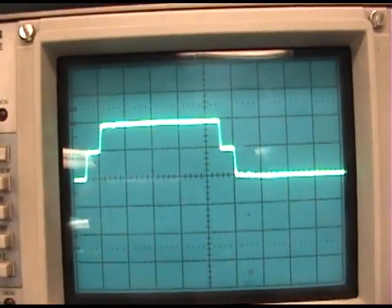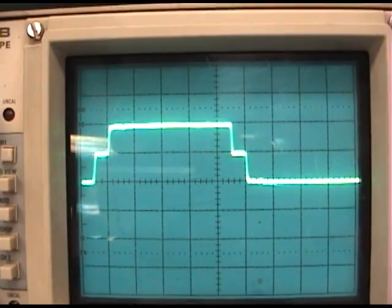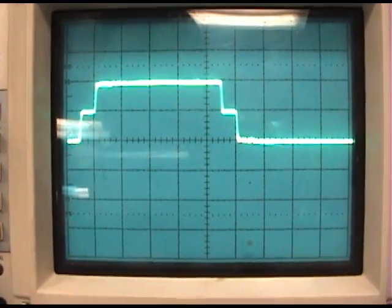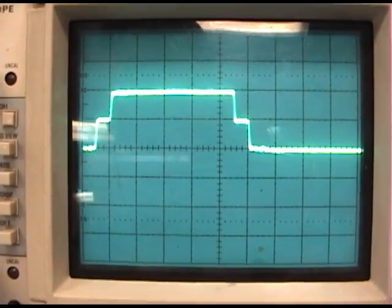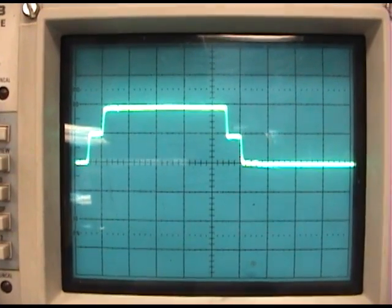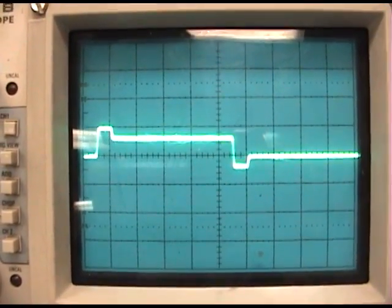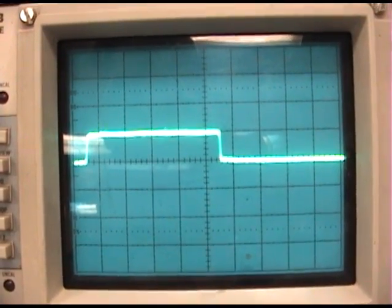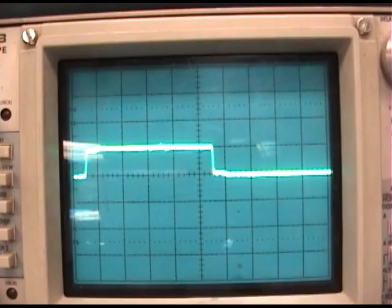So, as I adjust this pulse to, or as I adjust the potentiometer to closer to 50 ohms, we're going to see the reflection start to disappear. Because more of the pulse is being dissipated into the potentiometer.